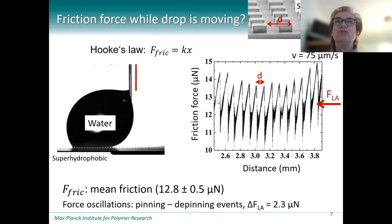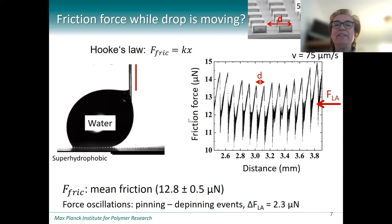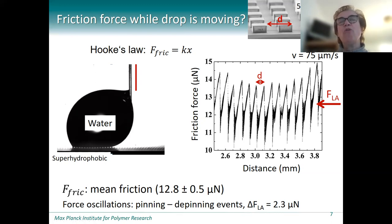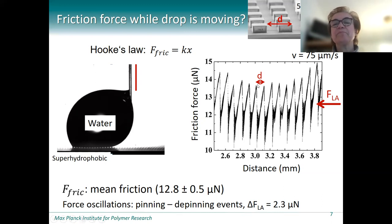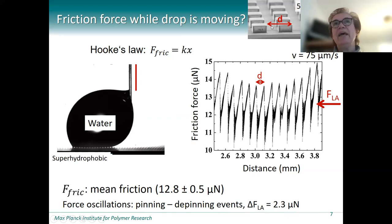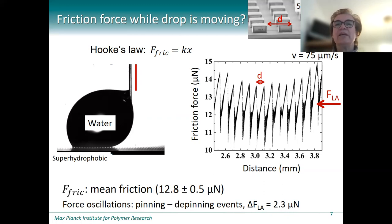If we make use of Hooke's law and insert the spring constant of the capillary and the measured deflection, we obtain the force while the droplet moves over the surface. On average, we have a force close to 13 micronewton. While the droplet moves over micropillar arrays, we have periodic pinning and de-pinning events, implying variations in the force. The maxima and minima provide a measure of the force needed to de-pin the droplet from a row of micropillars, and the distance between the maxima reflects the spacing and geometry of the micropillar arrays. For this situation, we have a force of the order of 2.3 micronewton.